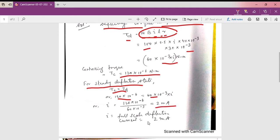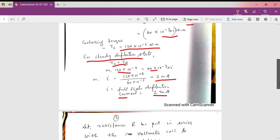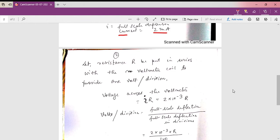So the full scale deflection current is 2 milliampere. Now let the resistance R be put in series with the voltmeter coil to provide one volt per division. Hence voltage across the voltmeter is V = I × R, so it is 2 into 10 to the power minus 3 into R.